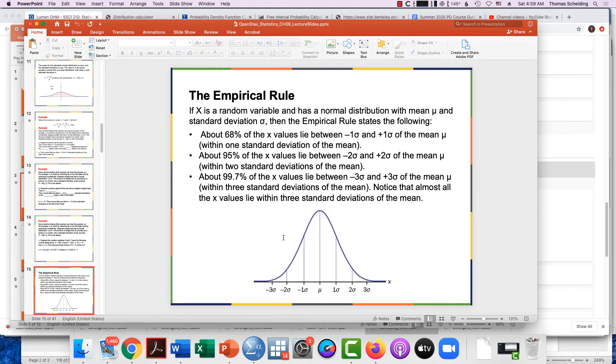And when we expand it up to three standard deviations on either side we get 99.7% of the values, which as it notes translates into the fact that almost all values are within three standard deviations of the mean if it is normally distributed.